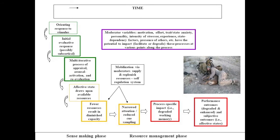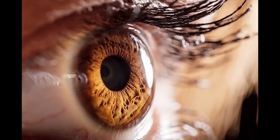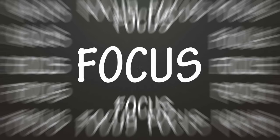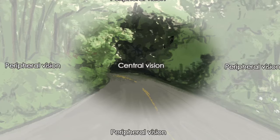The most common example is what is known as the Easterbrook hypothesis, in which our attention is tunneled. In other words, our attention is necessarily drawn toward the most salient features of the stressor, while simultaneously being drawn away from peripheral cues in one's own visual field.